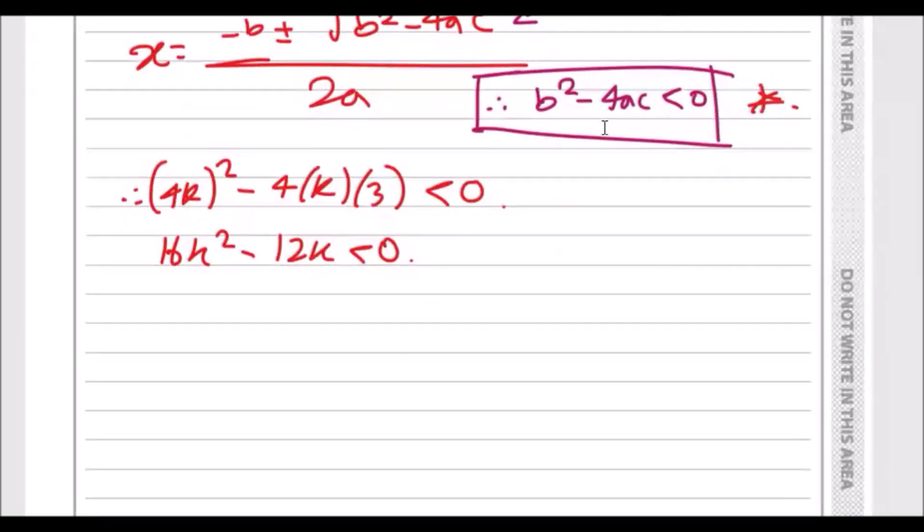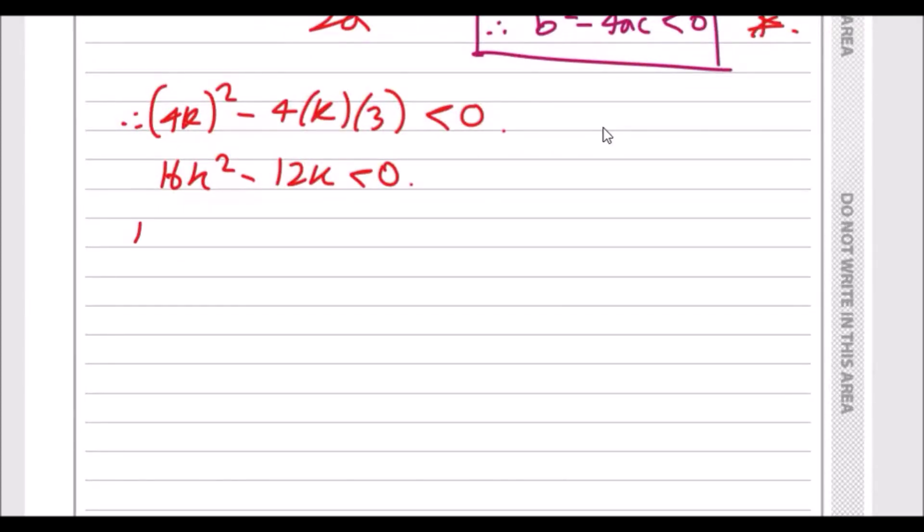Factorizing k from here, just solve this like you always do. You've got 16k minus 12 less than zero, so this means our result - the critical points are k equals zero or 16k equals 12, which is k equals three quarters.